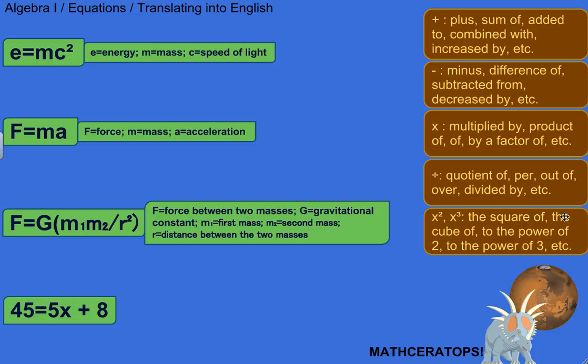So let's look at these equations and translate them into English. For these physics equations, I tell you what the variables stand for. Here's the classic one: E equals MC squared. Everybody's heard that equation, most famous physics equation today. So what is it actually saying? E stands for energy, M stands for mass, and C stands for the speed of light.